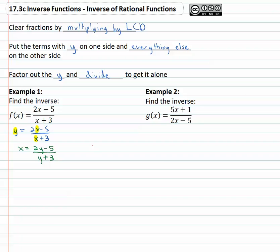Now we can start solving for y. First, we want to get rid of the fraction by multiplying both sides by the denominator y + 3. That way, the y + 3's are gone and we'll go ahead and distribute the x through: x(y + 3) = xy + 3x equals 2y - 5.